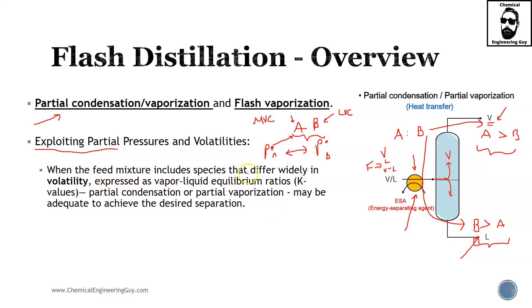When the feed mixture includes species that differ widely in volatility, expressed as vapor-liquid equilibrium ratios—remember if you have been taking physical chemistry or maybe thermodynamics, you know this concept of K values, which is nothing more than the composition in the vapor phase versus the composition in the liquid phase of a species, let it be methane, propane, octane and so on. Partial condensation or partial vaporization may be adequate to achieve the desired separation.